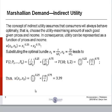We now derive the indirect utility function from the Marshallian demand for goods 1 and 2 using substitution. The concept of indirect utility assumes that consumers will always behave optimally. That is, they will choose the utility maximizing amount of each good given prices and income. In consequence, utility can be represented as a function of prices and income.